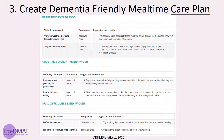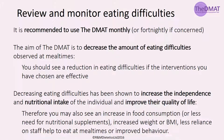The care plan is split into the four sections found on the initial measurement form to help with implementation. The care plan will be saved on the DMAT system for future reference, and you can also download, print and share the care plan with your colleagues. It is recommended to use the DMAT monthly or fortnightly if you have concerns about the individual. You do not need to complete the DMAT more often, as it will take time for the interventions you put in place to have an effect.